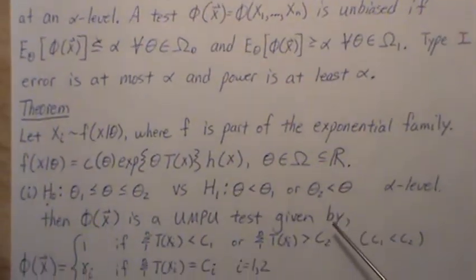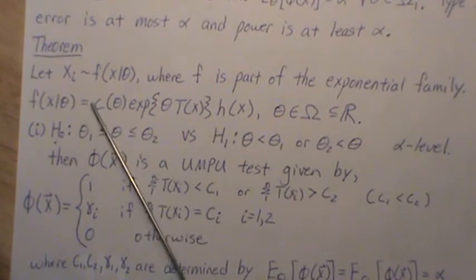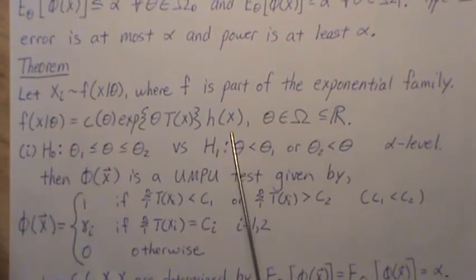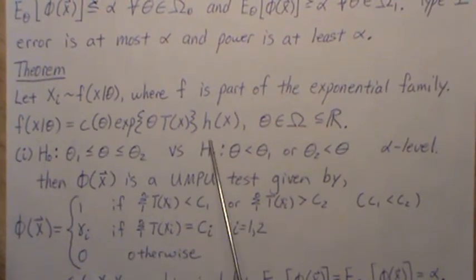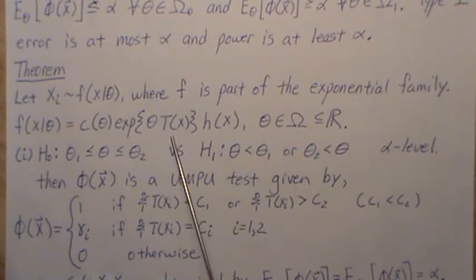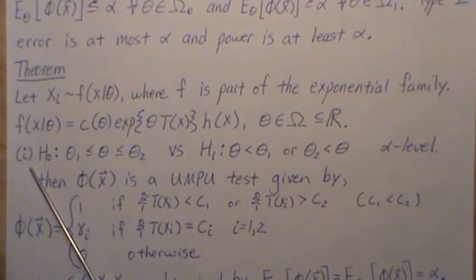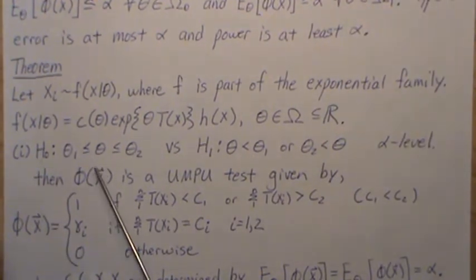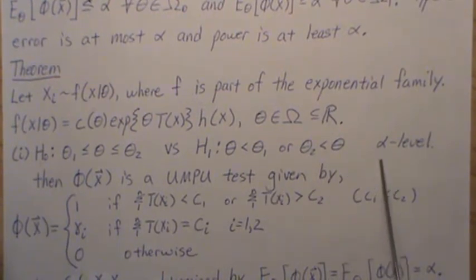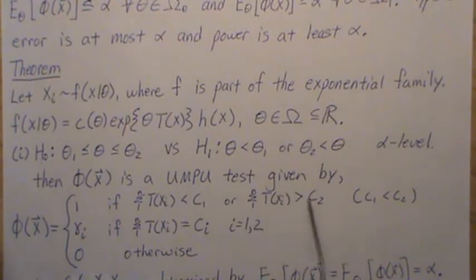Now let's look at a theorem — really a two-part theorem — and then we'll do an example. The theorem says: let Xᵢ be distributed with some density F that can be continuous or discrete, but F is part of the exponential family. That means F can be written in the form with some function of our unknown parameter, a function of the data only, and then e raised to the product of our parameter times T(X). θ is an element of Ω, which is part of the reals. There are two hypothesis tests we'll look at. The first is: is θ between two values (the null hypothesis) versus is it less than or greater than one of those values — testing at the α level. Then φ, our test function, is a uniformly most powerful unbiased test.